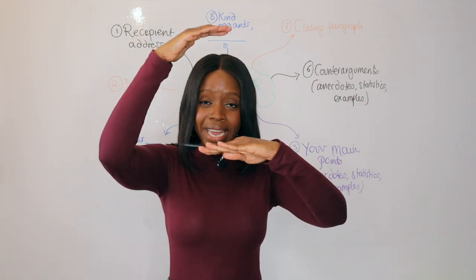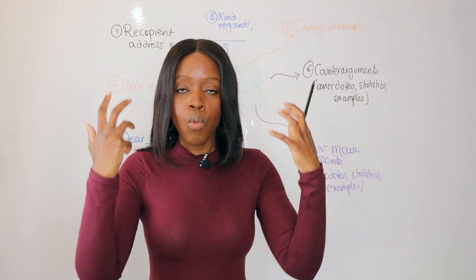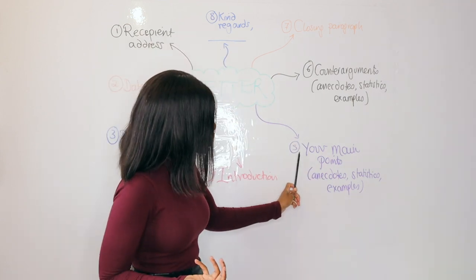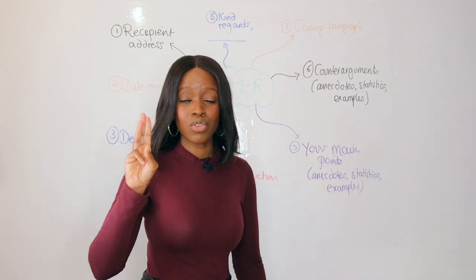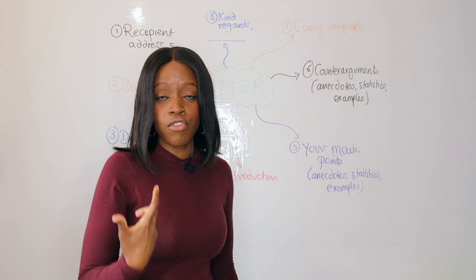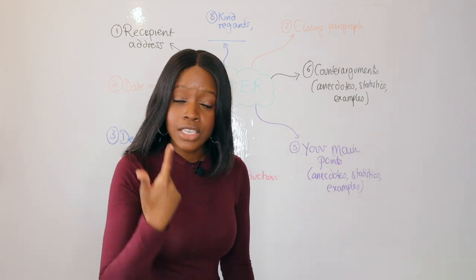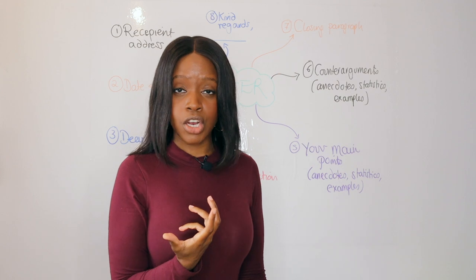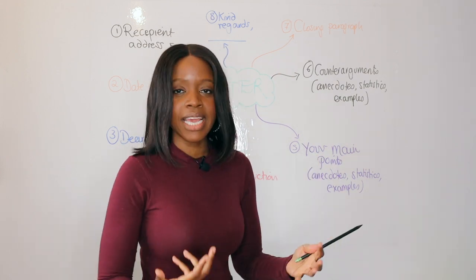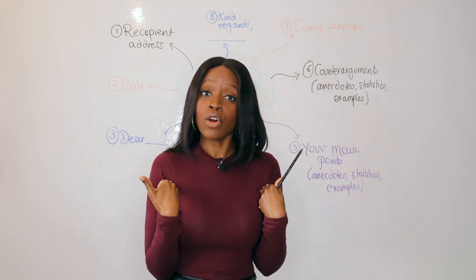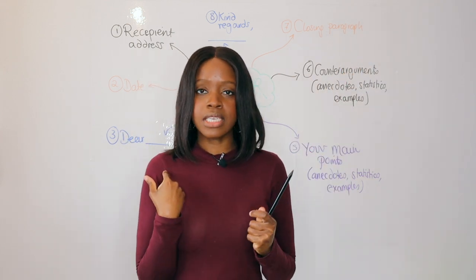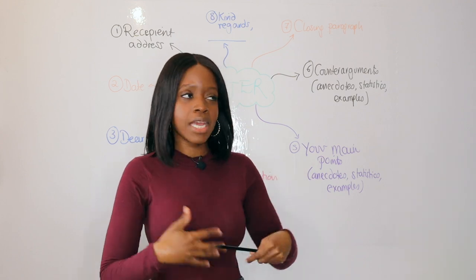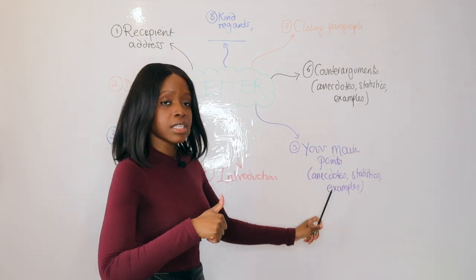Step number five is where you include your main substantial reasons — these are your body paragraphs. Try to aim for three main points, or at minimum two, arguing for your perspective. When arguing your perspective, show your teacher and examiner that you understand you don't only talk from your own view — you also need to back up your discussion with anecdotes, examples, and statistics. Show that there are studies out there, or a specific anecdote of someone who has experienced what you're passionate about.